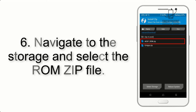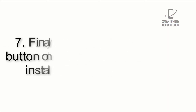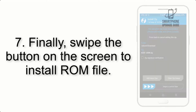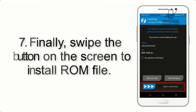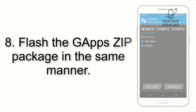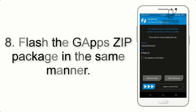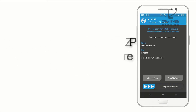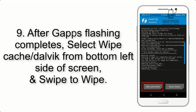Step 5: Go back to the recovery main screen and tap on the Install button. Step 6: Navigate to the storage and select the ROM zip file. Step 7: Finally, swipe the button on the screen to install the ROM file.